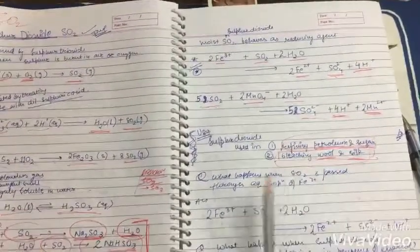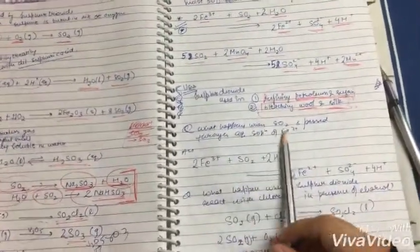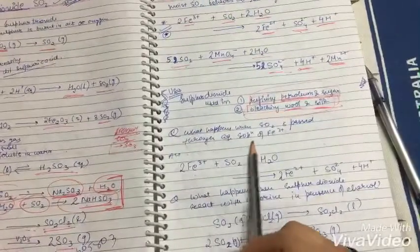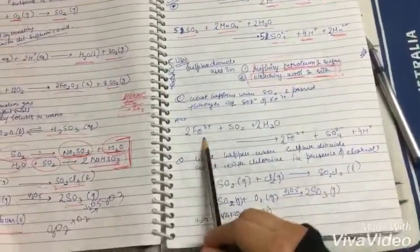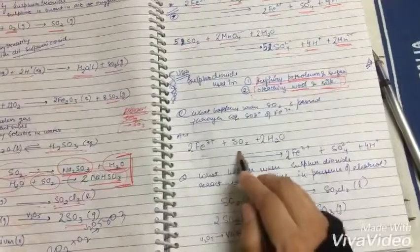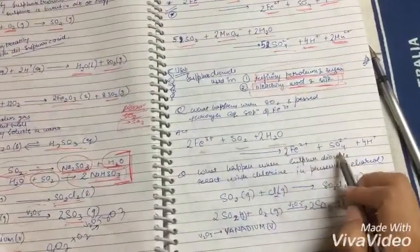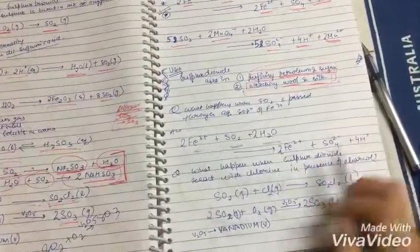Uses: refining petroleum and sugar, bleaching wool and silk. What happens when SO2 is passed through aqueous solution of Fe3+? Fe3+ plus SO2 and water gives Fe2+ plus SO4^2- and H+.